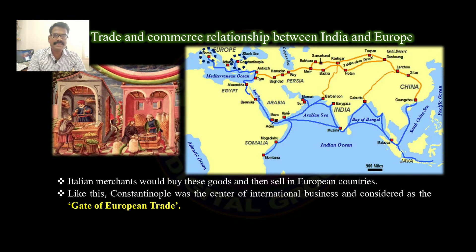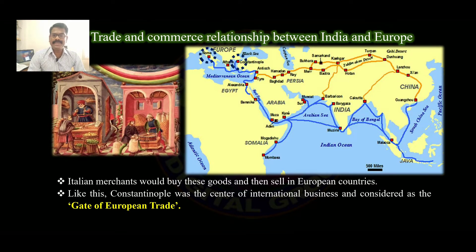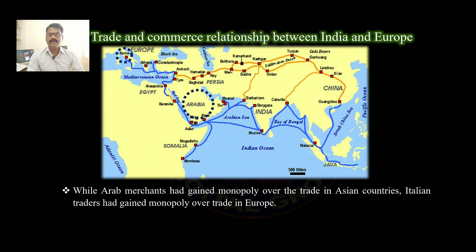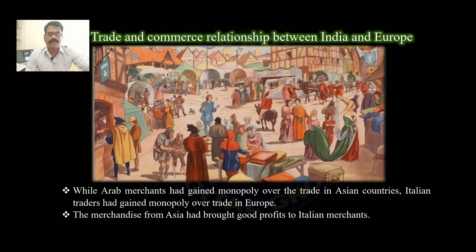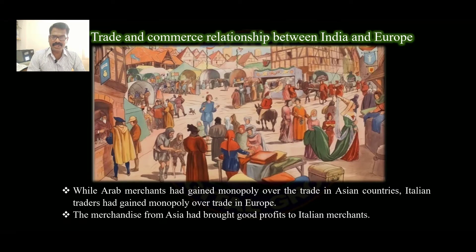Constantinople was the center of international business and considered as the gate of European trade. You can see in the map where exactly Constantinople is located. While Arab merchants had gained monopoly over trade in Asian countries, Italian traders had gained monopoly over trade in Europe. The merchandise from Asia had brought good profits to Italian merchants.